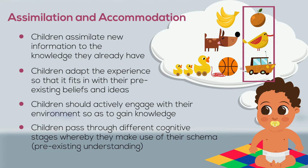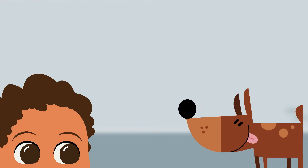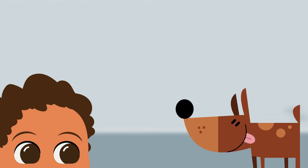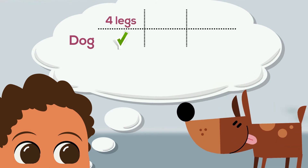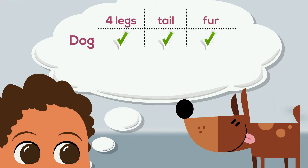Let me give you an example. Let's consider how a child learns about different types of animals, such as a dog. He or she has a schema of a dog: it has four legs, a tail, and is furry. Therefore, in his or her mind, every four-legged animal of that description is a dog unless the child is informed otherwise.